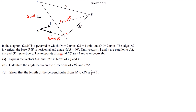The midpoint of AB is called M, and the midpoint of BC is called N. Express the vectors ON, NC, and CM in terms of I, J, K.